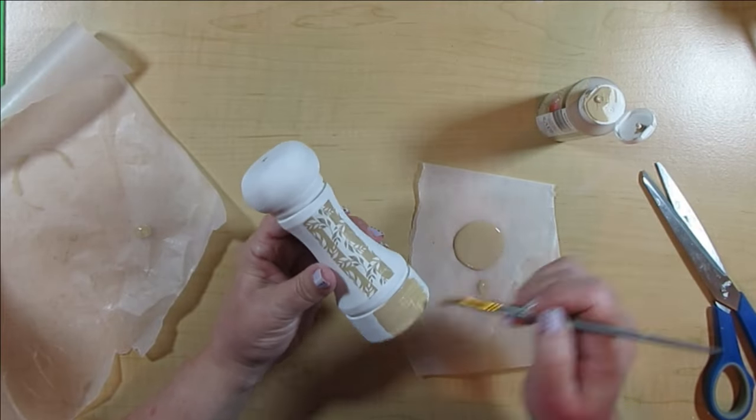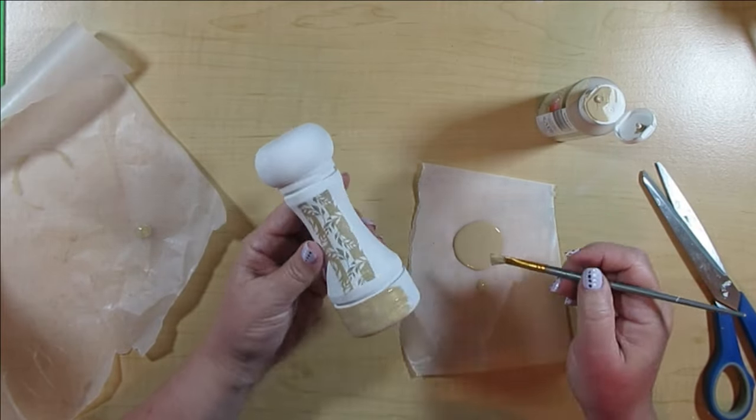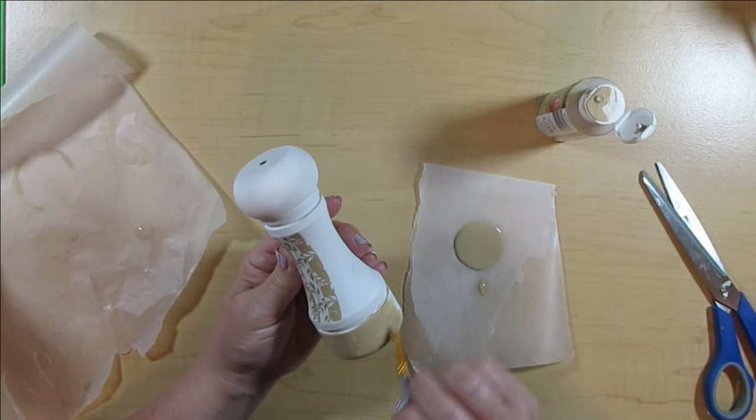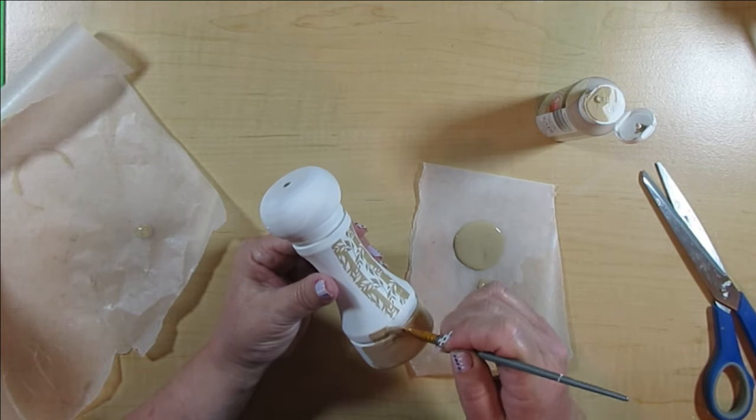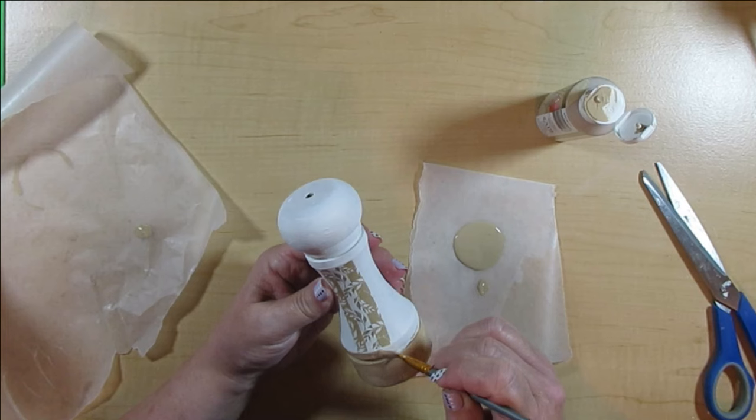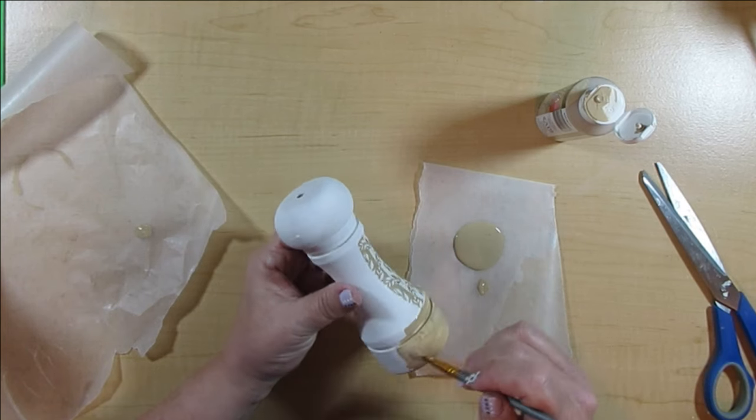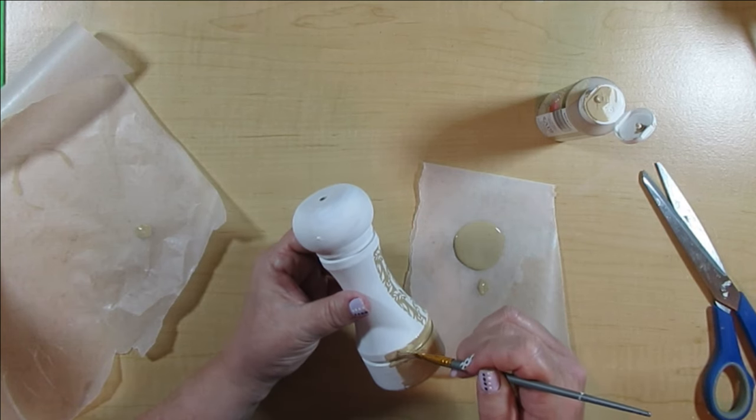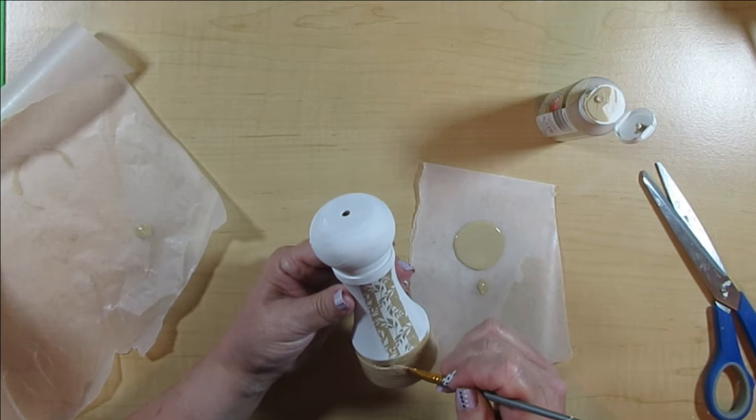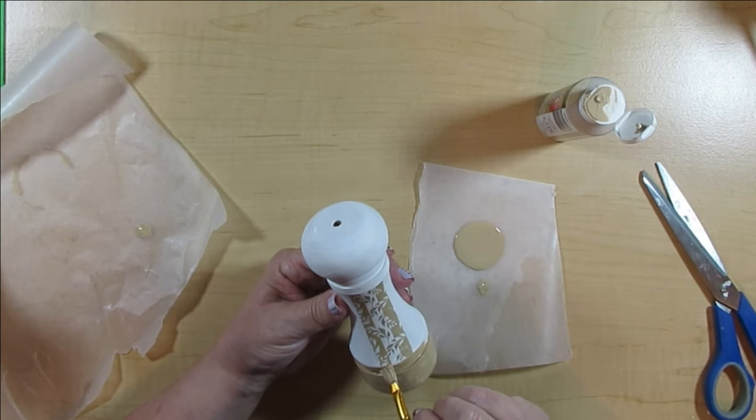I'm using the same tan color that was from the first project and I'm going to paint the bottom, go all the way up through the groove to that very top line there where it starts to curve in, and then I'm going to do just a little bit on the top too.